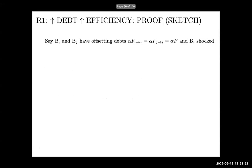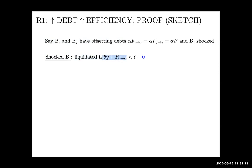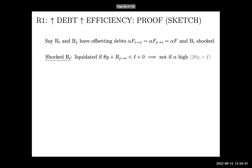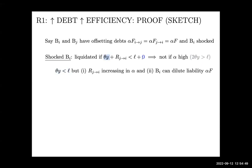Mechanism sketch for the long-term debt result: with offsetting long-term debts alpha*F between banks i and Brianna, and bank i shocked, the liquidation condition becomes theta*Y plus the value of interbank claims less than the liquidity shock L — and crucially the interbank liabilities don't appear, because they're not due at date one and therefore don't encumber pledgeable assets. Doing comparative statics on alpha: Brianna's repayment to me increases with alpha up to a limit, so my pledgeable assets grow with alpha, making liquidation less likely when alpha is high enough.